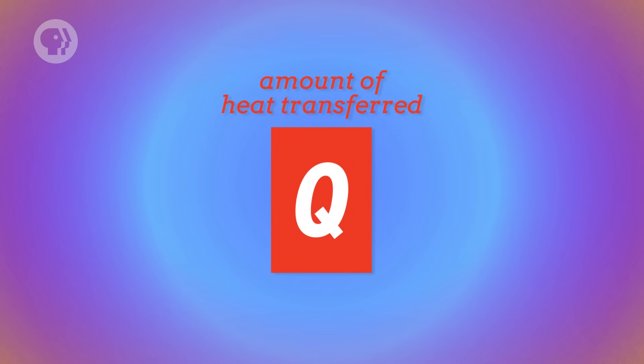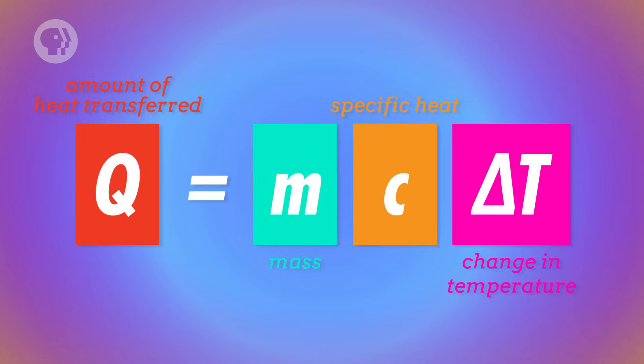That means it takes much more heat to change the temperature of water compared to aluminum. In general, the amount of heat transferred to or from a substance is equal to the mass times the specific heat, which we designate with a small c, times the change in temperature. And if Q, which represents heat, is positive, that means heat is flowing into the system. If Q is negative, heat is flowing out.